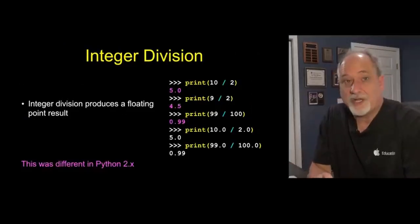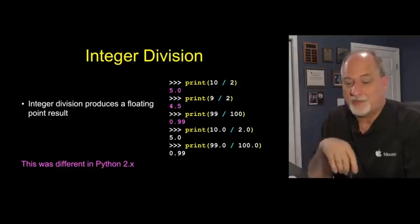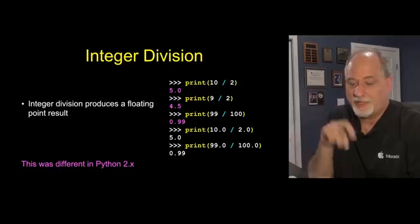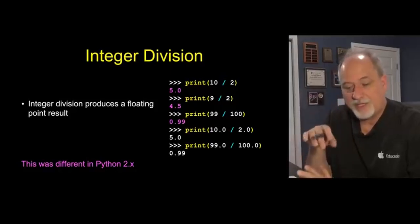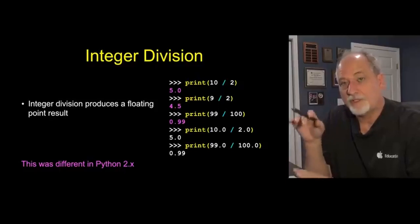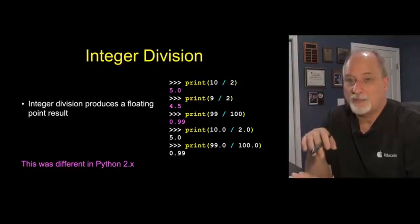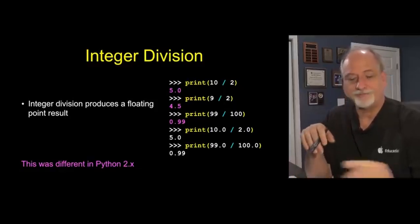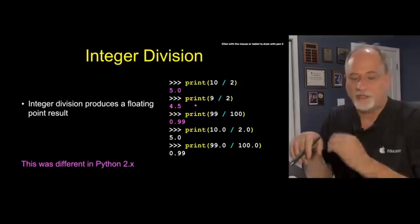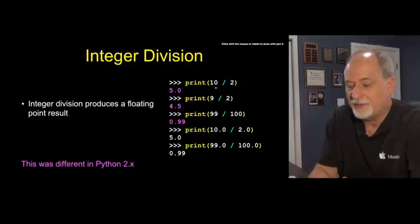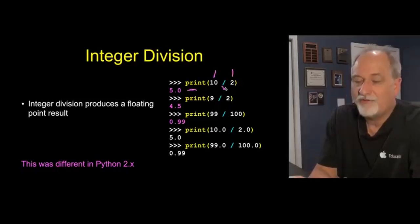Integer division in Python 2 was kind of weird. It was actually one of the big things they changed between Python 2 and Python 3. This is a Python 3 course. What's nice about integer division in Python 3 is it always produces a floating point result. That means Python 3's division is more predictable and it works more like a calculator. 10 divided by 2 is 5.0.